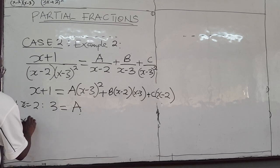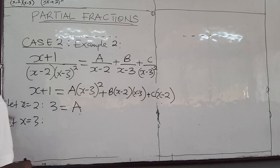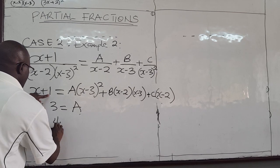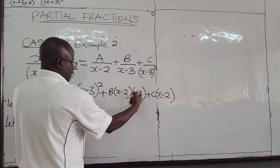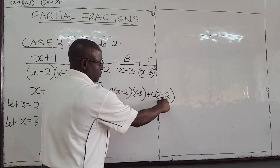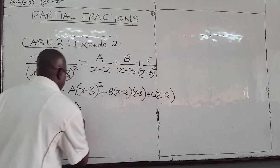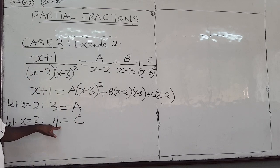Then I'll let x be equal to 3. 3 plus 1 is 4. 3 minus 3 is 0. This goes, this is 0 that goes. 3 minus 2 is 1. 1 times C is C. So I have C. So I have A, I have C. So that's easy.